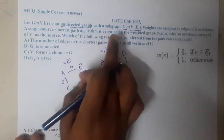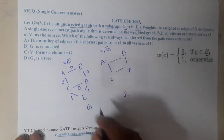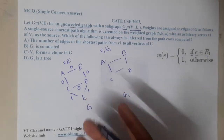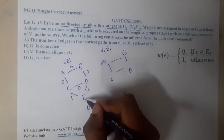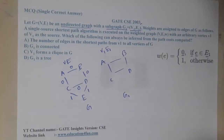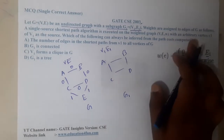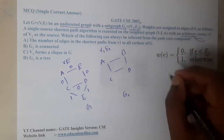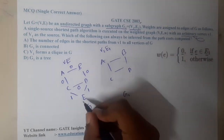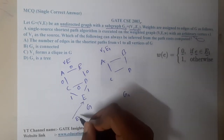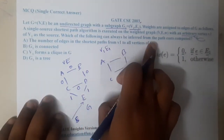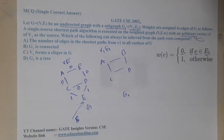Now the question is: a single source shortest path algorithm is executed on this weighted graph G starting from a particular point. With an arbitrary vertex v1 — arbitrary means it could be any vertex. For our assumption, let us take e as our starting point.